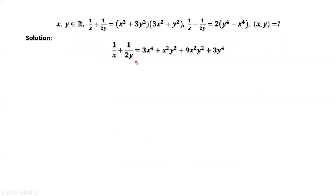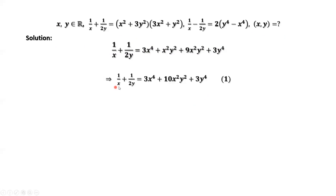This is the first given equation. We simplify the right-hand side. We have this part. Continuing to simplify the right-hand side, we get 1 over X plus 1 over 2Y equals 3X to the power of 4 plus 10 times X squared Y squared plus 3Y to the power of 4.